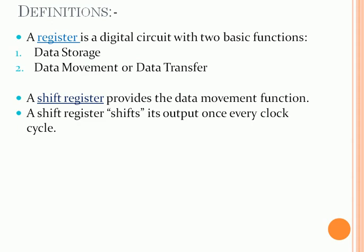A register is a digital circuit that is basically a group of flip-flops. It is used for two purposes: number one, data storage, and number two, data movement or data transfer. When we use a register for the movement of data, it is known as a shift register.